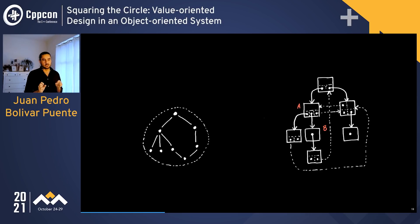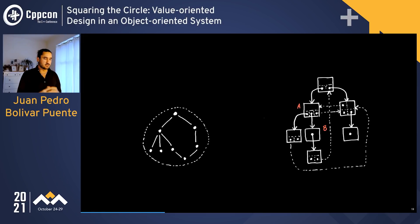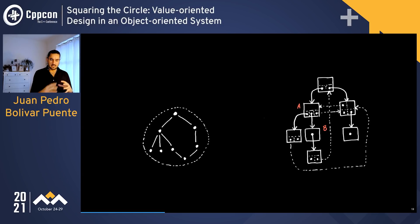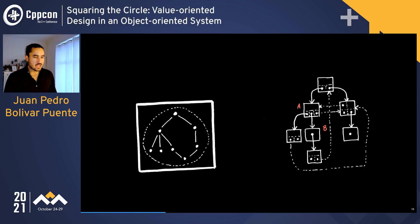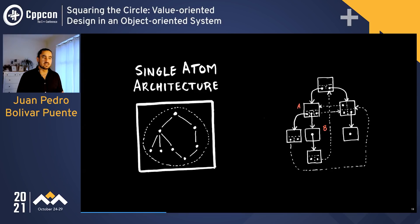Instead, we want to model our application data not as a graph of objects but as a tree of values, using composition as the basic tool for abstraction. When the whole data model is a value, we can use just one big box to store it. This is called the Single Atom Architecture — a term I borrow from Clojure, a language that provides a lot of my inspiration.